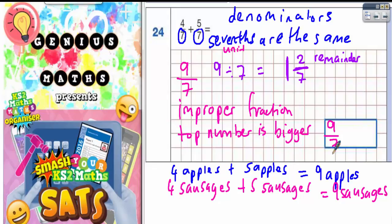So it's one and two sevenths. So in our answer box, it's nine sevenths, which is equal to one whole one and two sevenths remainder, one and two sevenths.